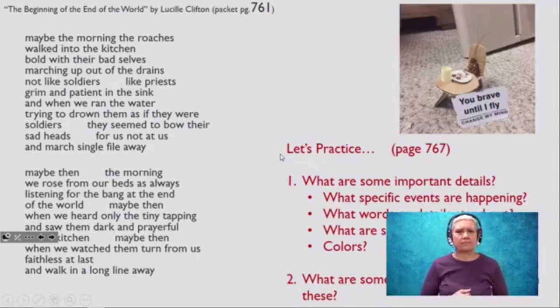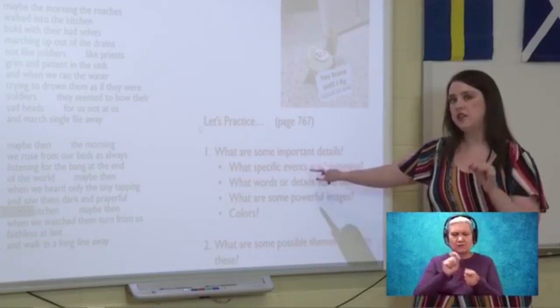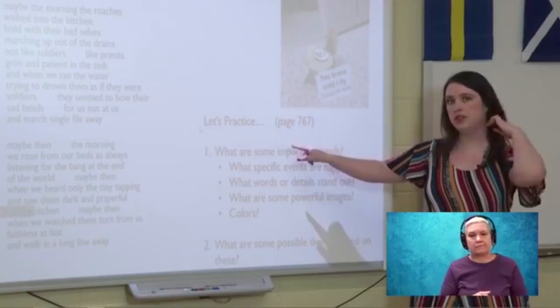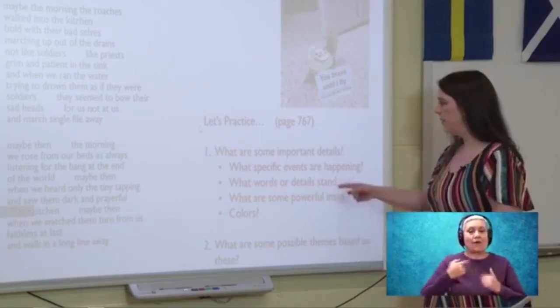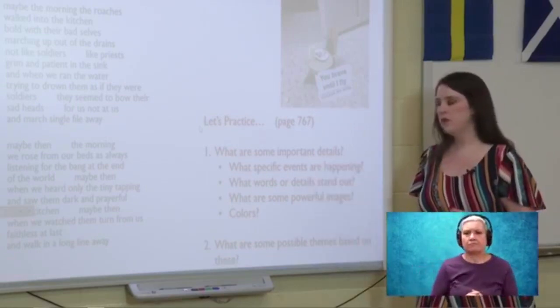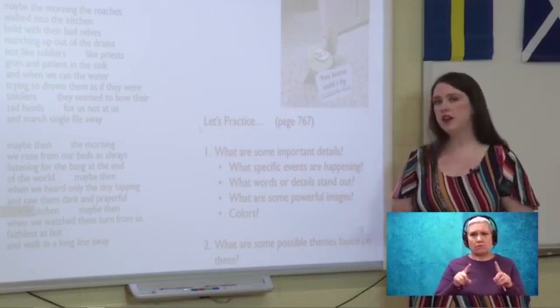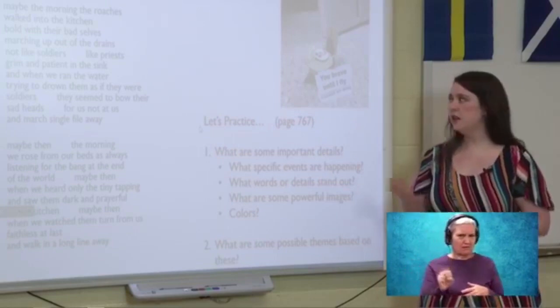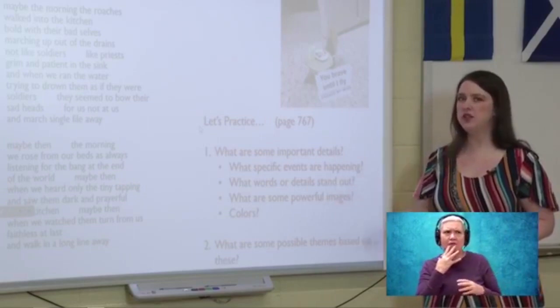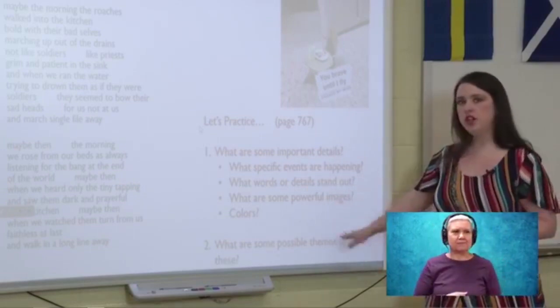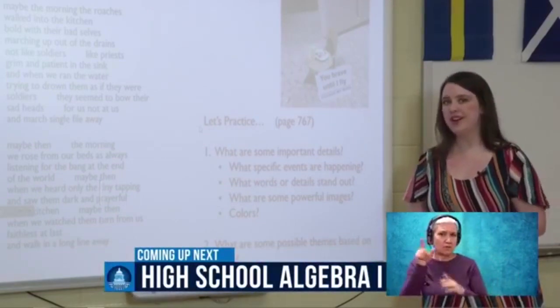So, here's what I want you to do. I'm going to show you how I would tackle this poem. But I want you to take just a minute, and I want you to jot down what are some specific events that you see happening. And in fact, this is your exercise that you will be turning in this week for a minor grade. Page 761, this is part of what you'll be doing. But I want you to see how I would do this. What are some specific events that you see happening? What are some words or details that stand out? Remember to look at maybe what's different about these roaches. Look at how they're described. Listen to the tone that Lucille Clifton uses. What are some powerful images? Maybe even colors that you see. And then I want you to come up with what are some possible themes based on these. I'm going to give you just a couple of minutes to do that.